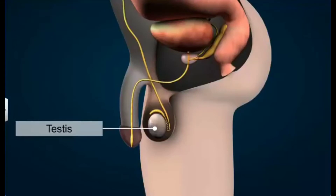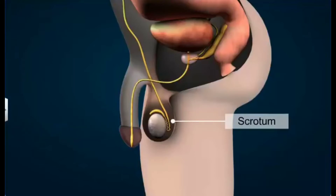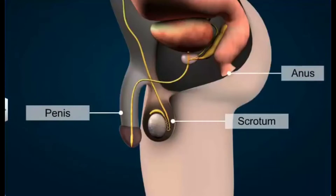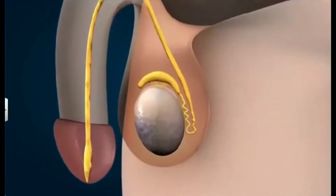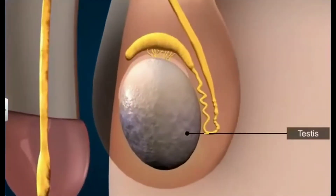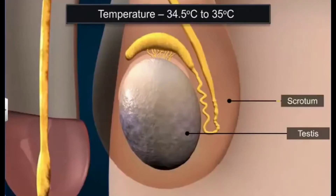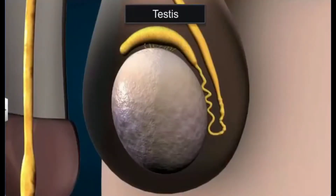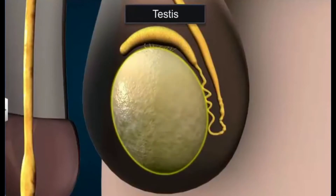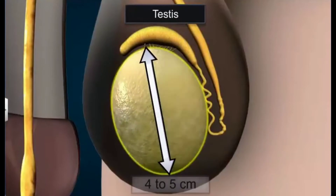The testes are covered by a sac-like protuberance of skin and muscles called the scrotum. The scrotum lies between the penis and the anus. The testes need to be at a temperature of 2 to 2.5 degrees less than the body temperature to produce sperms. Hence the scrotum is outside the body and has a temperature lower than the body. The testes are oval in shape with a length of about 4 to 5 centimeters.